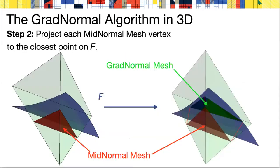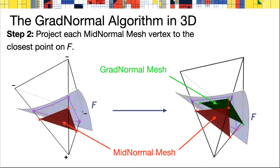The second step is to project each midnormal mesh vertex to its closest point on the surface F. Here at right, you see the red midnormal triangle is projected to the green GradNormal mesh by closest point projection of the three vertices. Sometimes this midnormal vertex is projected outside the tetrahedron onto the GradNormal triangle.